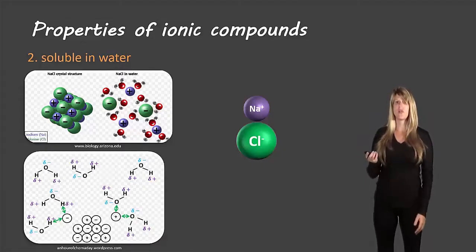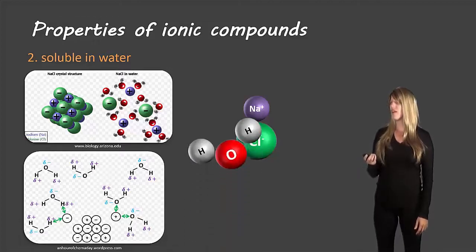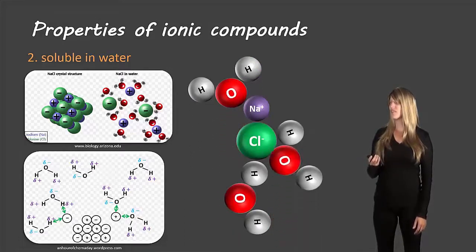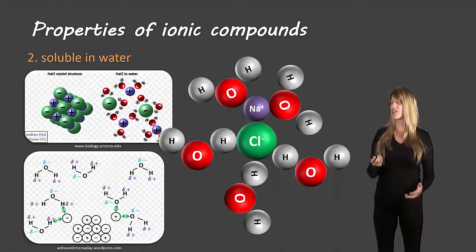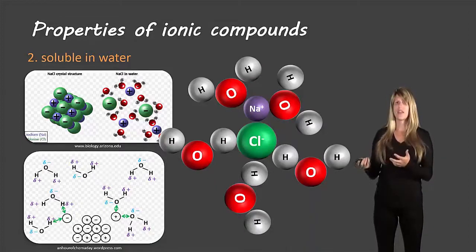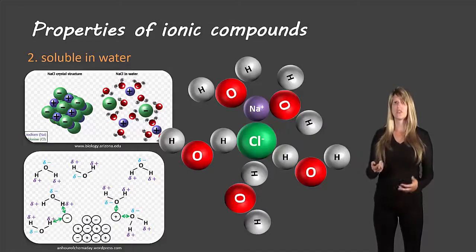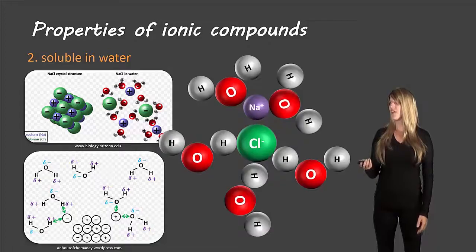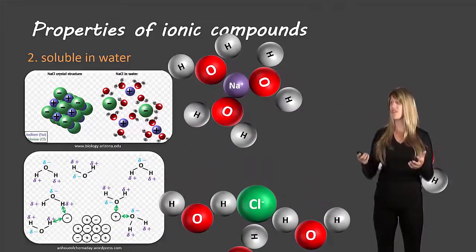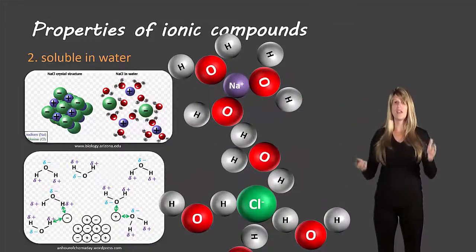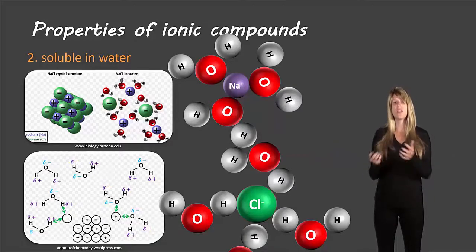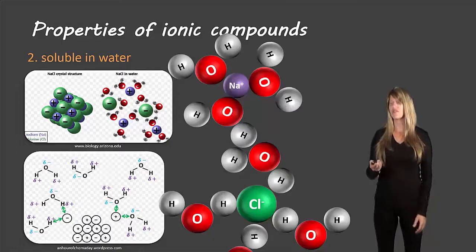Here's an animation of what happens: we have one formula unit of sodium chloride, and water molecules attract to it — the positive hydrogen parts are attracted to the negative chlorine, and the slightly negative oxygen parts are attracted to the sodium. These ions then separate out, more water fills in the gaps, and each ion is now surrounded by either positive or negative charge to balance itself out.